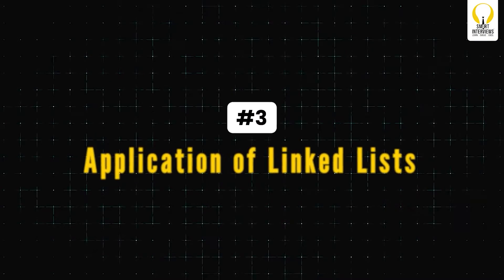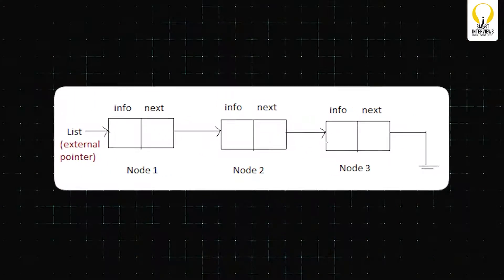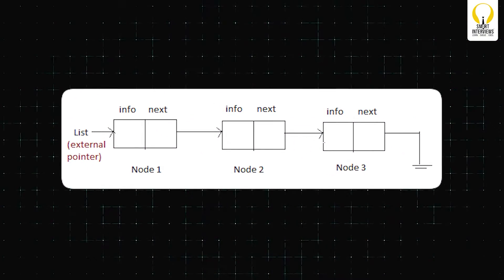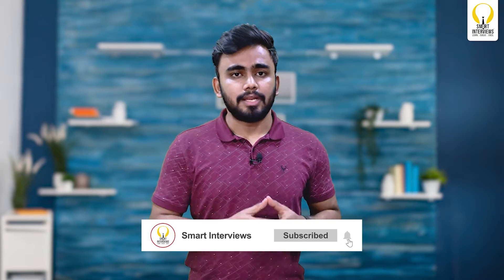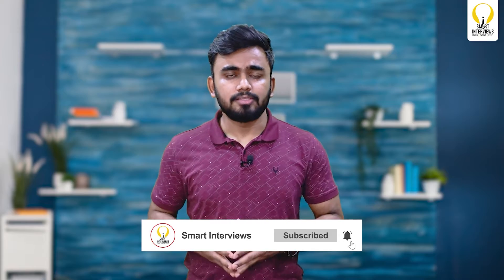A linked list is a sequence data structure that connects elements, called nodes, through links. Unlike arrays where elements are stored in contiguous memory locations, linked data structures consist of individual nodes connected through pointers and references.